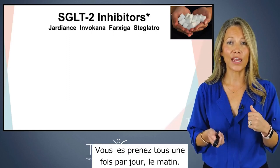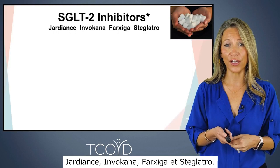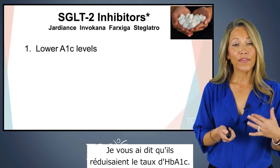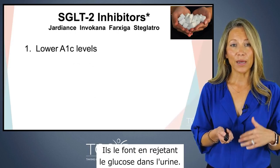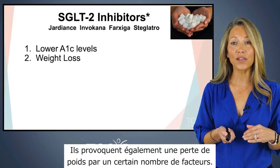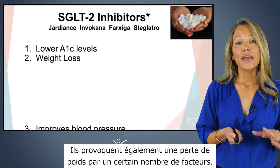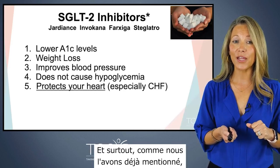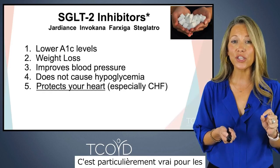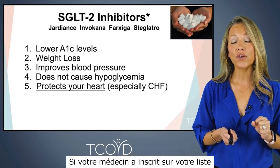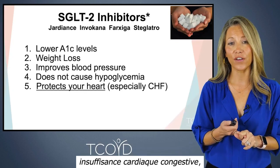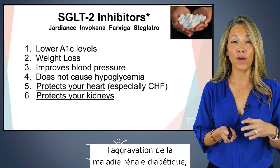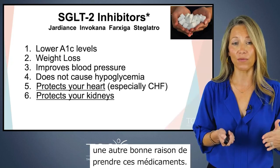There are four SGLT2 inhibitors available: Jardiance, Invokana, Farxiga, and Steglatro. They lower A1C levels by dumping glucose into the urine, cause weight loss by a number of factors, improve your blood pressure, and don't cause hypoglycemia. Importantly, they protect your heart — especially for people with heart failure or CHF — and protect your kidneys from worsening diabetic kidney disease. These are both very good reasons to be on these medications.